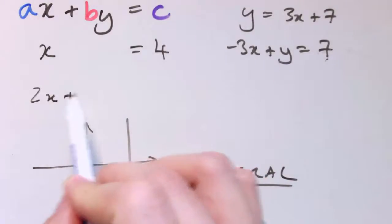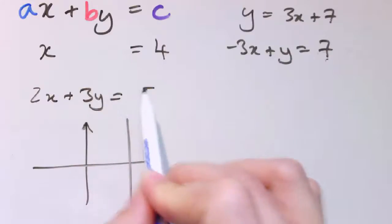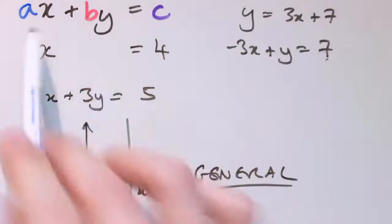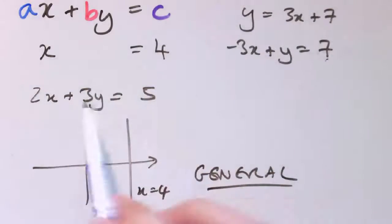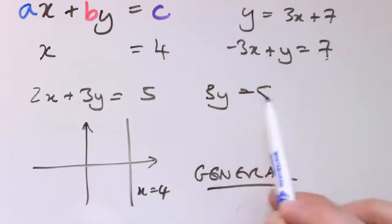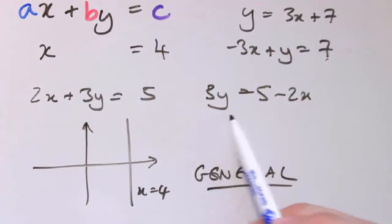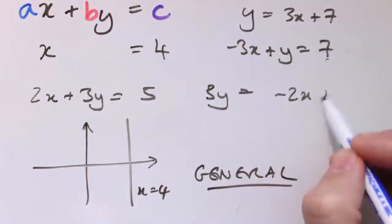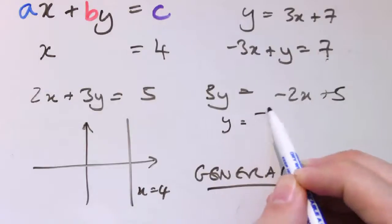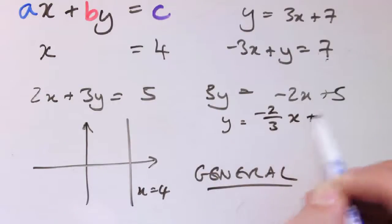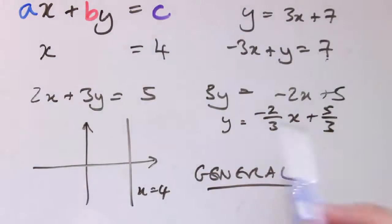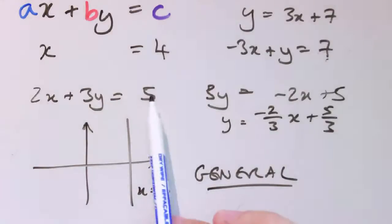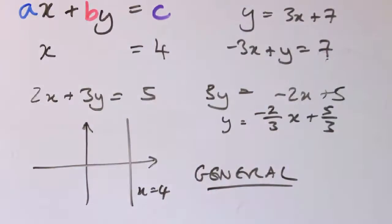Note that c here doesn't always end up being the y-intercept. For example, starting with 2x plus 3y equals 5, I can rearrange to get y equals minus two-thirds x plus five-thirds, so this is a straight line with gradient minus two-thirds and y-intercept five-thirds. The c in ax plus by equals c is not the same as the y-intercept in general.